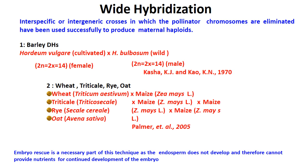Coming to wide hybridization. Interspecific or intergeneric crosses in which pollinator chromosomes are eliminated have been used successfully to produce maternal haploids. For example in barley, Hordeum vulgare crossed into bulbosum — vulgare is used as female and bulbosum as male, as explained by Kasha and Kao in 1970. Similar hybridization techniques were obtained in wheat, wheat into maize, triticale, triticale into maize, rye into maize, and oats into maize. Embryo rescue is a necessary part of this technique as endosperm does not develop and cannot provide nutrients for continuous development of the embryo.